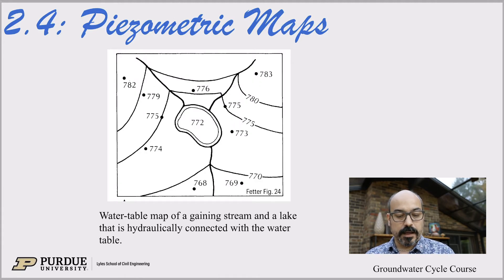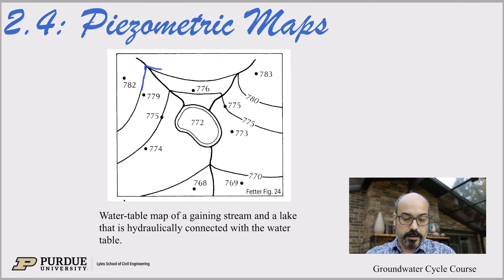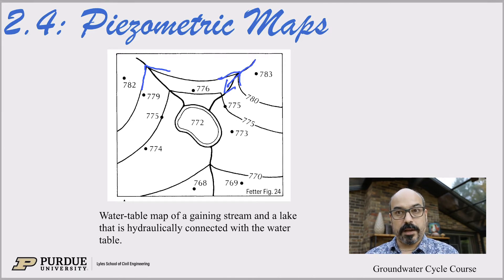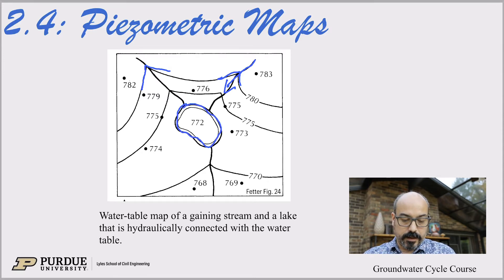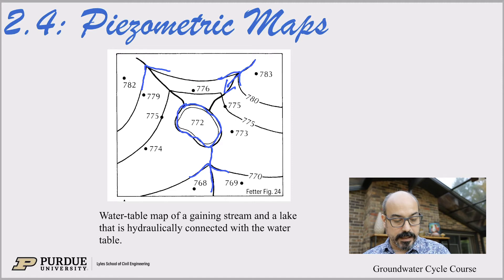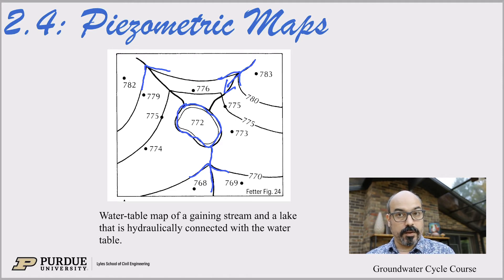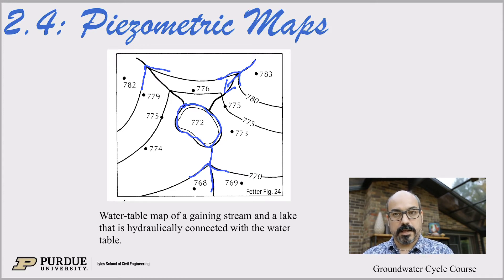Here's an example of a few gaining streams — you can see those Vs pointing upstream. That means those streams are gaining water. They're connected to a lake here with an outflow, and there's a gaining stream below it. It's a water table map of a gaining stream and a lake hydraulically connected with the water table. This example is from Fetter in your textbook.